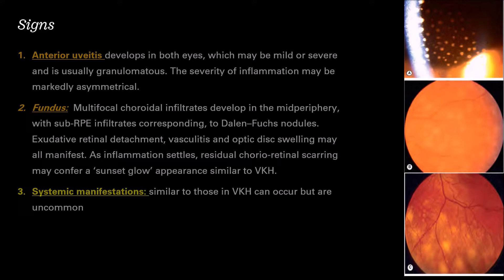On examination, we will see anterior uveitis with large keratic precipitates, usually characteristic of granulomatous uveitis. It can be mild or severe but is usually granulomatous. The severity of inflammation is markedly asymmetrical. On fundus examination, there are multifocal choroidal infiltrates, hypofluorescent points corresponding to Dalen-Fuchs nodules, exudative retinal detachment, vasculitis, and optic disc swelling.